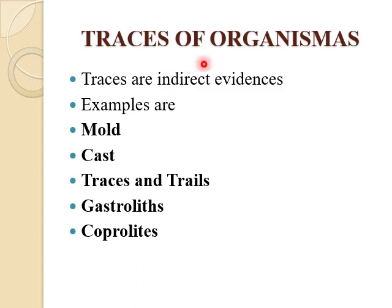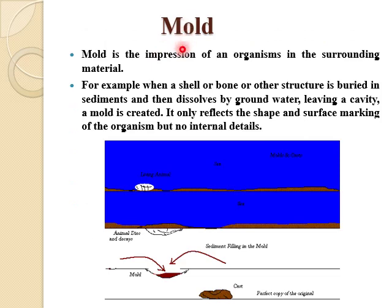Now we are going towards the traces of organisms. The traces of organisms are also indirect evidences of fossils. The examples of these traces are mold, cast, traces, trails, gastroliths, and coprolites. Firstly, mold is basically an impression of an organism in surrounding material. For example, when a shell or bone or other structure is buried in sediments and then dissolved by ground water, leaving a cavity — that is a mold.